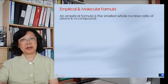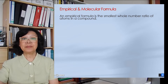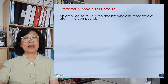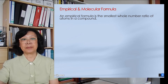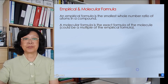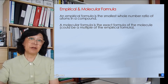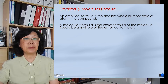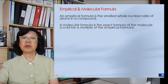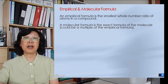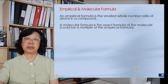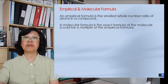So what is empirical formula? It is the smallest whole number ratio of atoms in a compound. The molecular formula is different — it represents the true formula of the compound and it could be a number of multiples of the empirical formula.